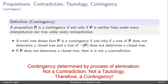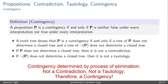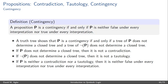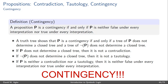A truth tree shows that P is a contingency provided a truth tree test of P does not show P is a contradiction, and provided P is not shown to be a tautology. If P does not determine a closed tree, we know it's not a contradiction. And if testing ¬P doesn't yield a closed tree, we know it's not a tautology. So if P is neither a contradiction nor a tautology, then P is sometimes true and sometimes false — and so P is a contingency.